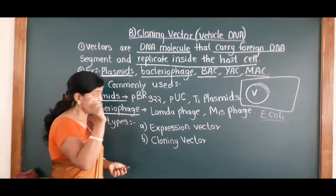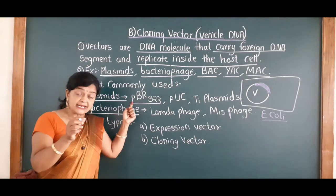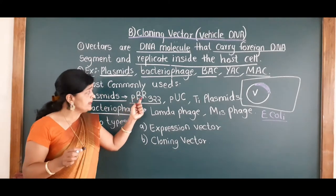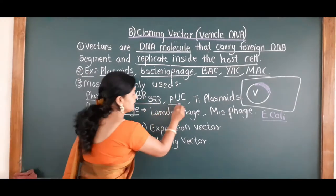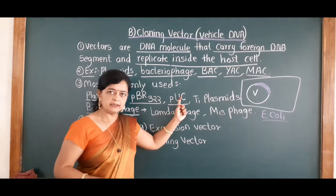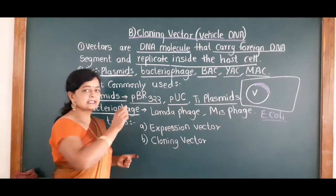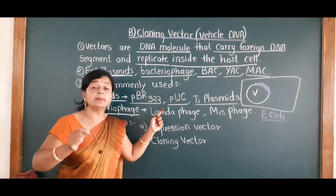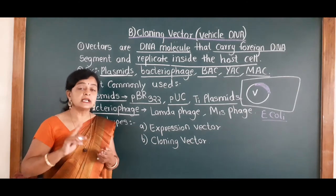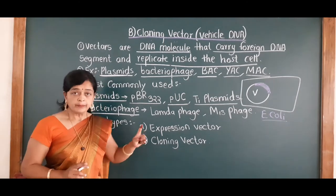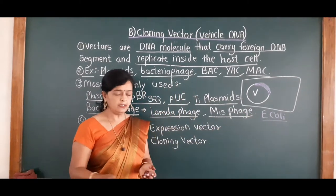For plasmids, scientists are generally using PBR-322 — where P stands for plasmid, BR stands for the name of the scientist, and 322 is the number. PUC — again, P is plasmid and UC is the name of the scientist — and P1 plasmid. These are the three plasmids usually used by scientists. For bacteriophages, the two viruses generally used are lambda phage and M13-phage.